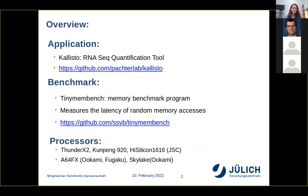Calisto is the application we chose for the benchmarking. It's a genomics application and an open source application developed by Pactor Lab at Berkeley University. We also ran a tiny membench, which is a memory microbenchmark to measure the latency of random memory access. We benchmarked Calisto and tiny membench on different ARM processors, including ThunderX2, Compeng N120, and HiSilicon 1616, which are part of the cluster at GSD, as well as A64FX on the Okami and Skylake on the Okami cluster.